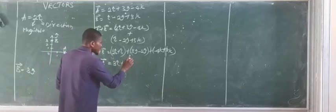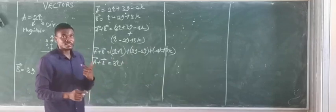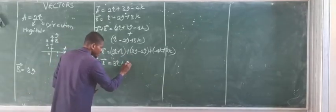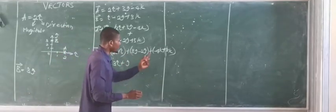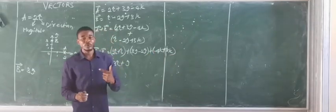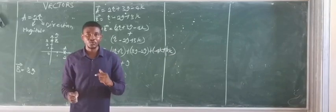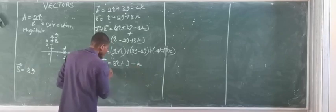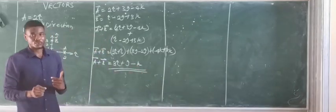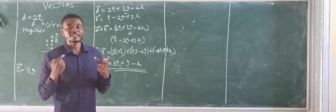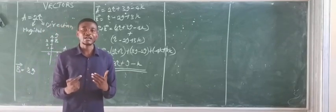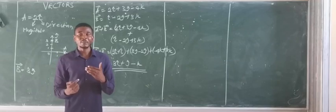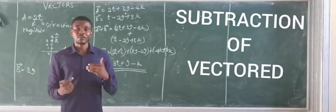So vector A plus vector B equals: 2I plus 1I gives 3I. Then 3J minus 2J, same as 3 minus 2, which equals 1J. And minus 4K plus 3K equals minus K. So this is how we add vectors — vectors can only be added when they are in the same direction: I can only add to I, J can only add to J, and K can only add to K.